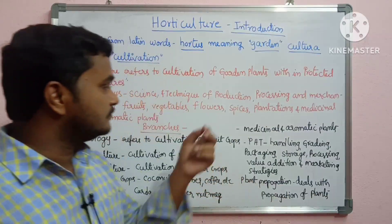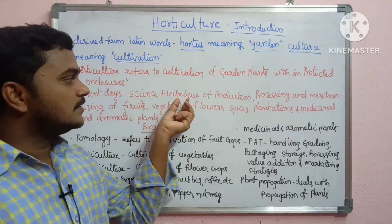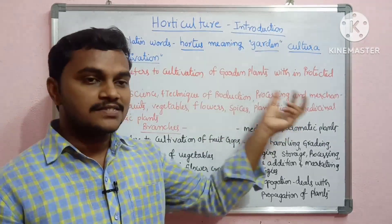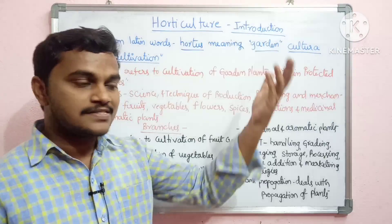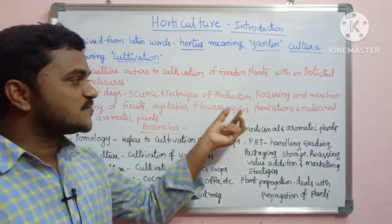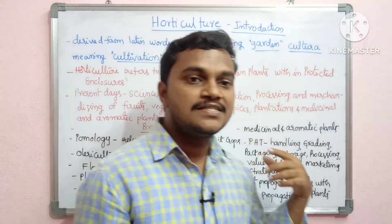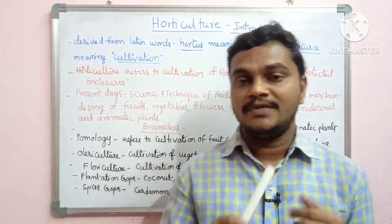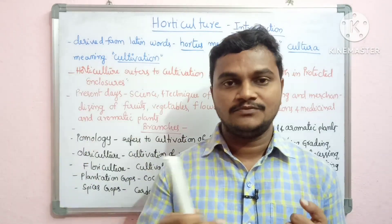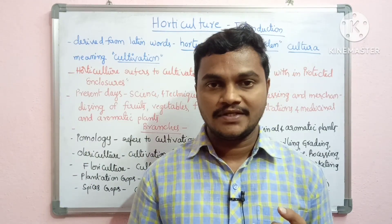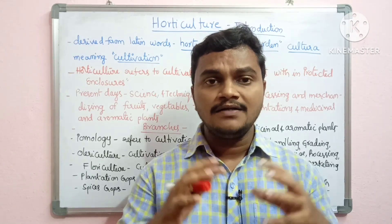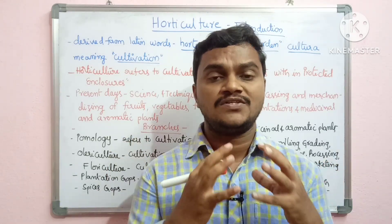Horticulture encompasses science, technology, and technical production — how to produce, process, and harvest products. This includes fruits, vegetables, flowers, spices, plantations, and medicinal and aromatic plants, covering all types of plant-related products.